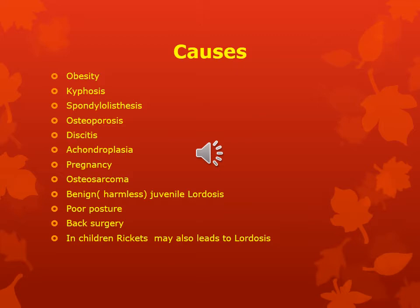Achondroplasia — the growth of the long bone is retarded and it results in very short limbs. Next, pregnancy. Osteosarcoma means a malignant tumor present in the bone. Next, benign juvenile lordosis — that means harmless lordosis in childhood without any known cause. In this case the muscles around the hip of the child are getting weak.